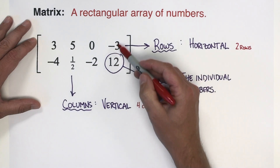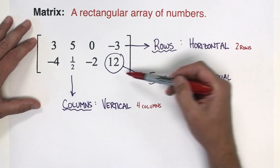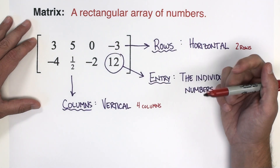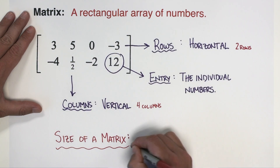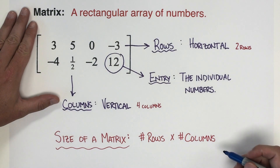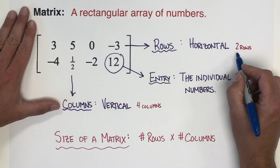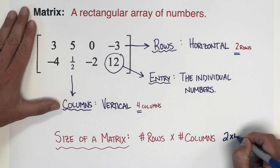Each individual number within the matrix we call those entries. So the number 12 is an entry — it's the entry that's in the second row, fourth column. Now the other thing we need to talk about is the size of a matrix. The size is always reported as its number of rows by its number of columns. You can think of the size as like the dimensions of the matrix. So this particular matrix has two rows and four columns.